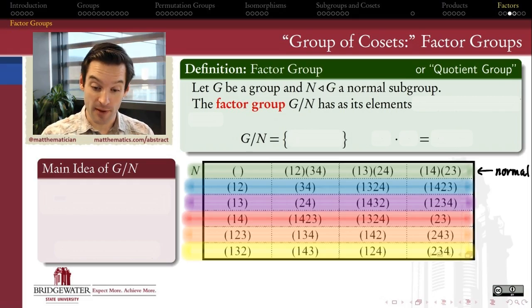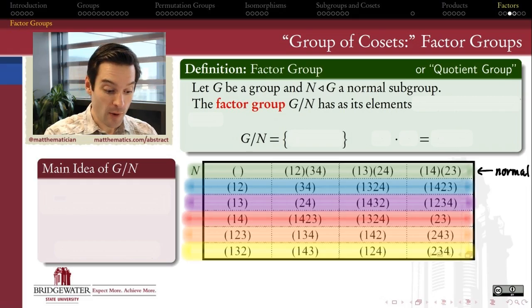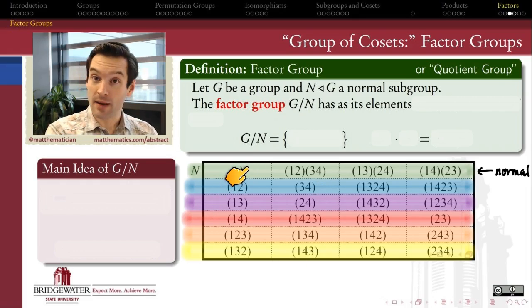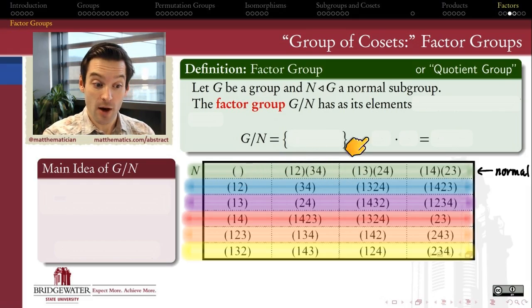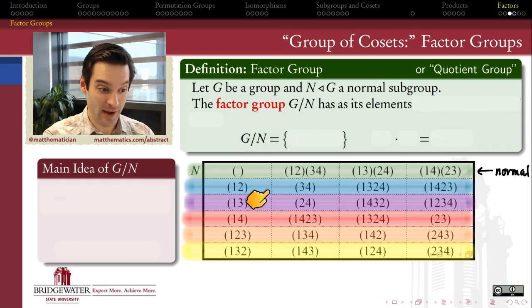So coming back to the example that we've been working through in this video, where my group is S4, and my subgroup, my normal subgroup, is N, which consists of the identity and all the 2 plus 2 cycles. The idea behind G mod N is supposed to be that it's a group whose elements are the rows of this times table here.